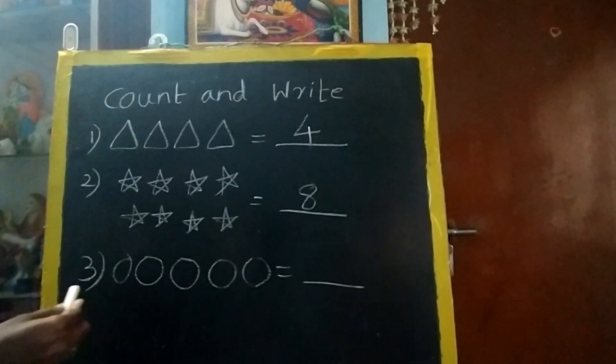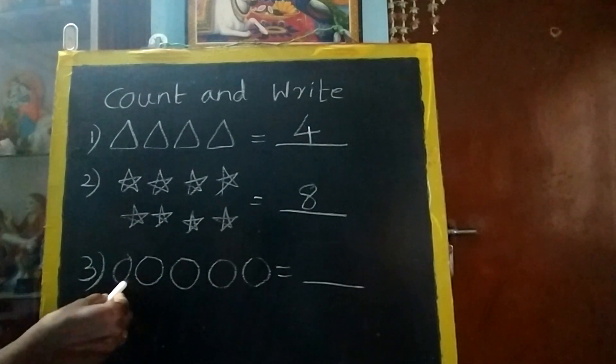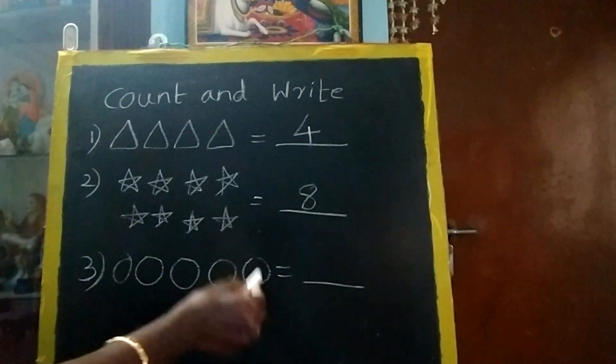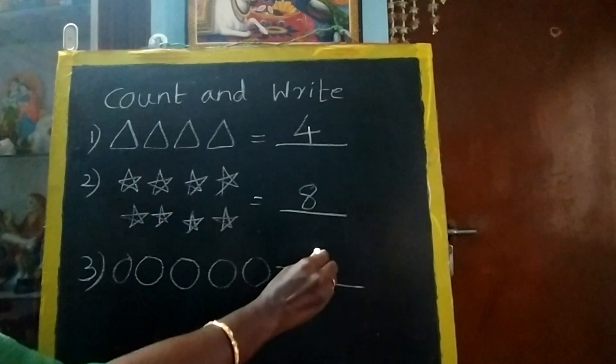You have to write very neatly. How many circles? 1, 2, 3, 4, 5. So you have to write 5 circles.